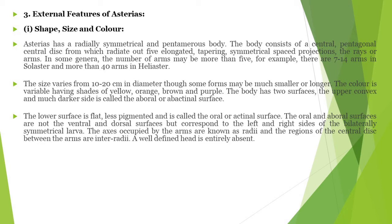The surface of the body is divided into two parts: oral and aboral surface. The oral surface is where the mouth is present. The oral surface is ventral and less pigmented, also called the oral or actinal surface. The oral and aboral surfaces correspond to the ventral and dorsal surfaces respectively, and are related to the left and right side of the bilateral symmetrical larva.